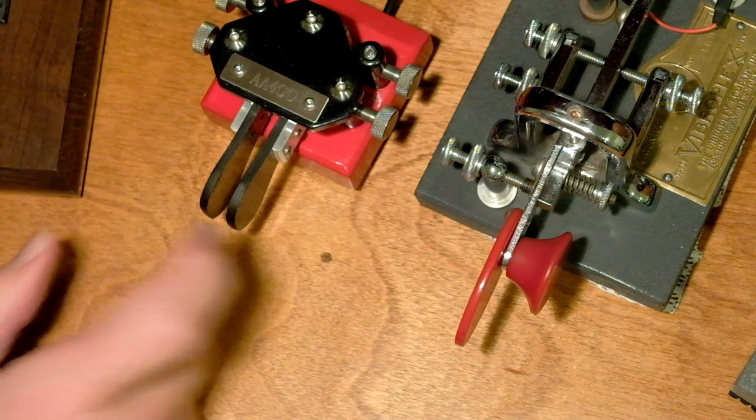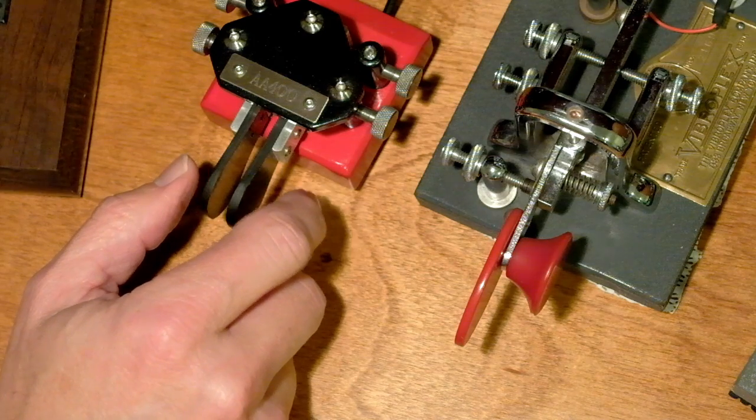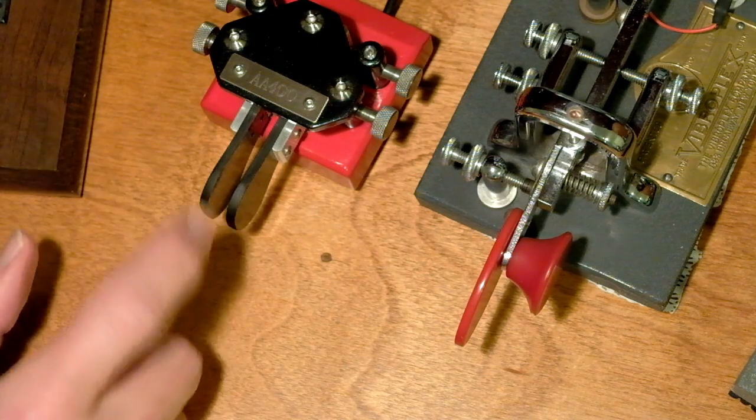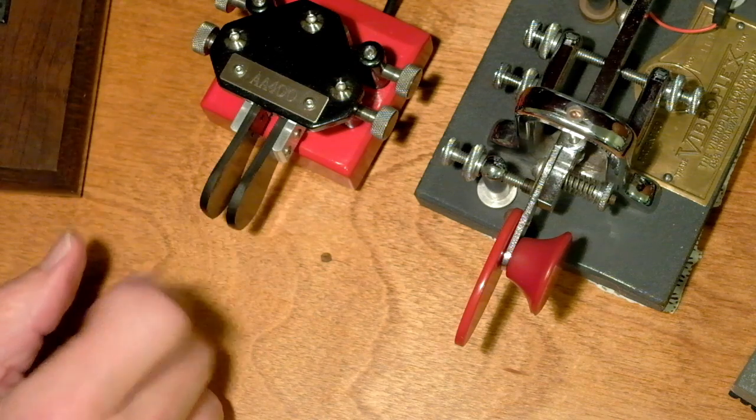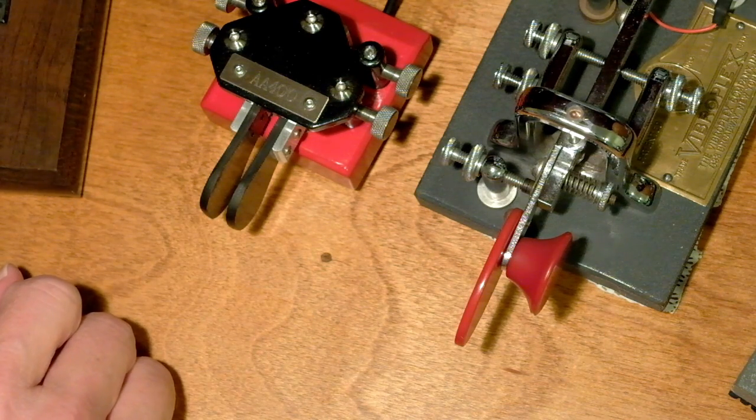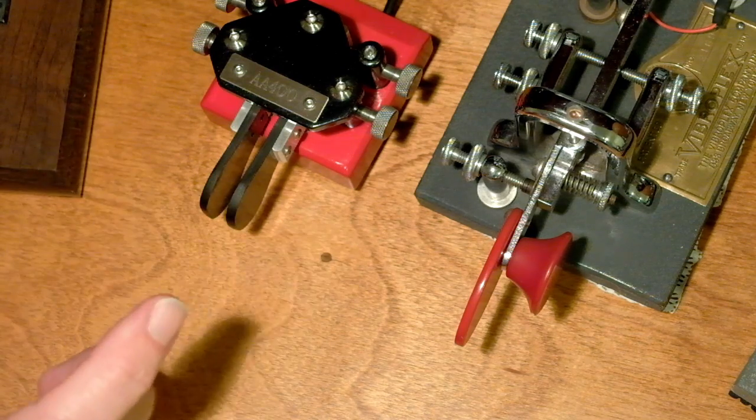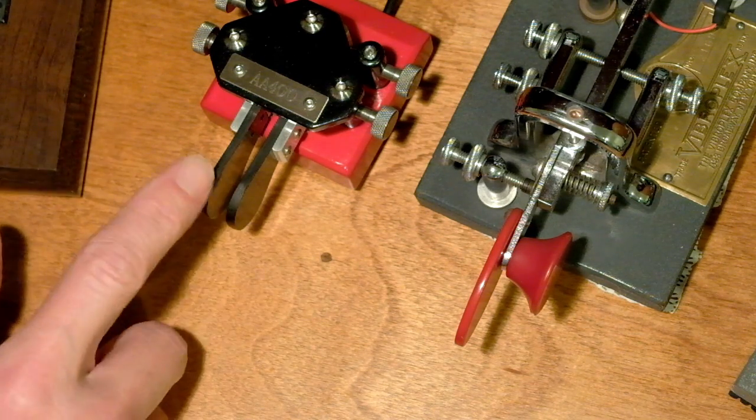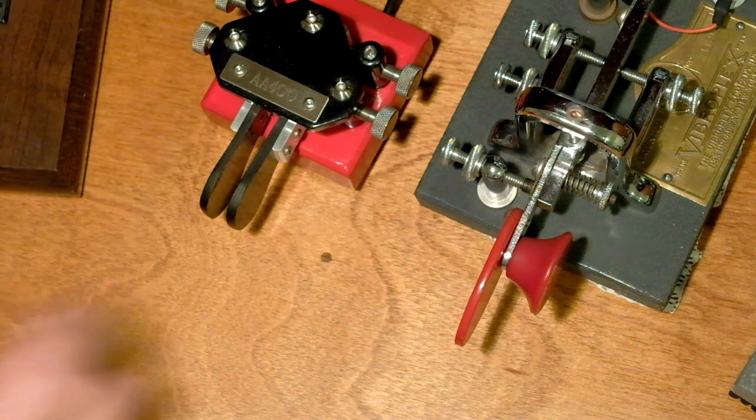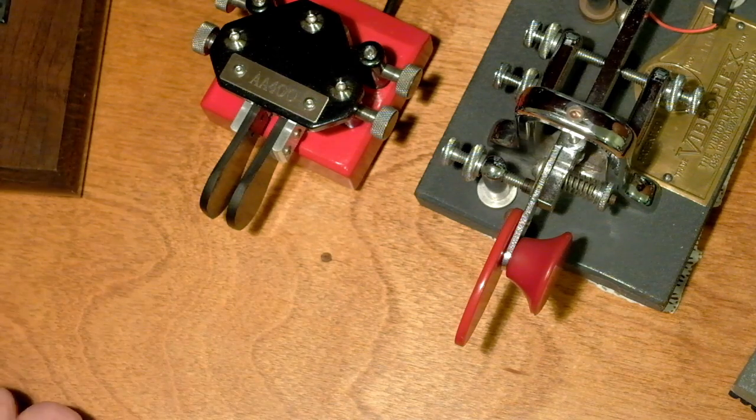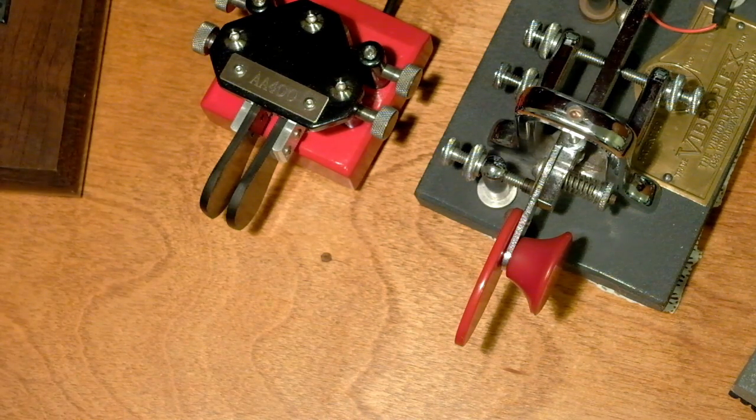So before I was sending an A by just squeezing them together and letting go, and you heard the dah because I let go while it was making the dah, it stopped. But in mode B, it's going to do the dit, the dah. I'm going to let go while it's making the dah and it's going to follow up by sending the dit again.